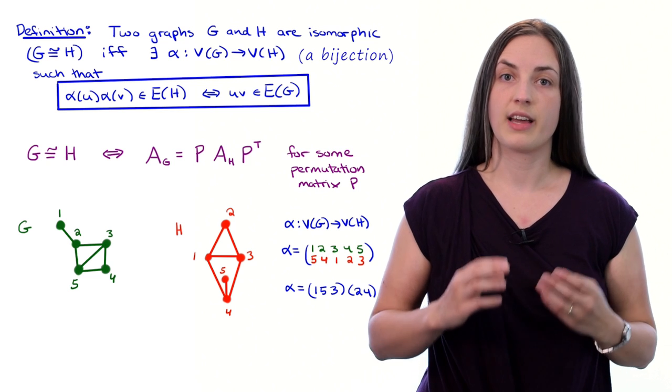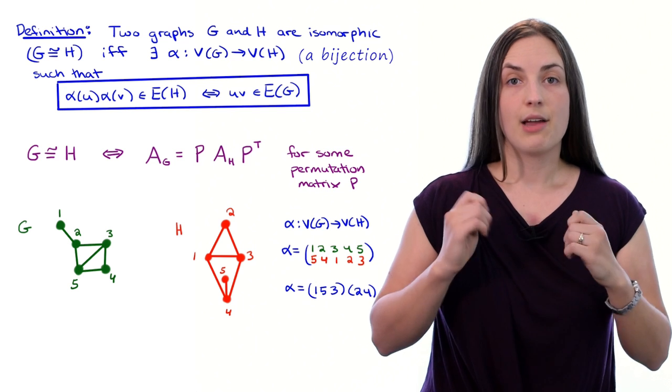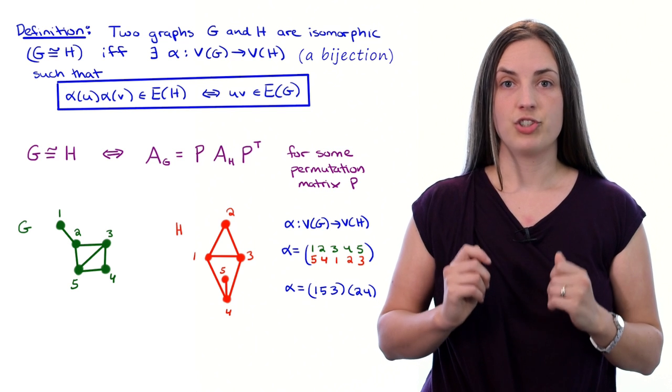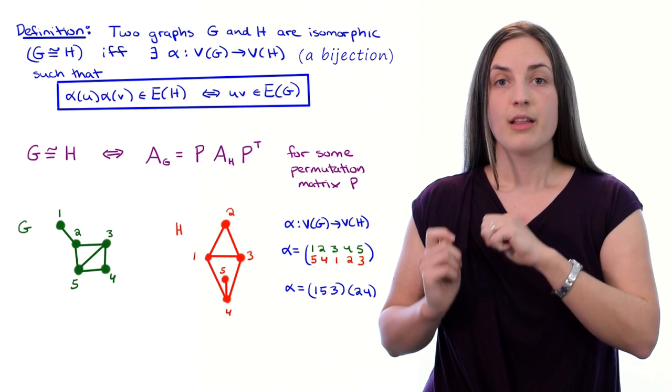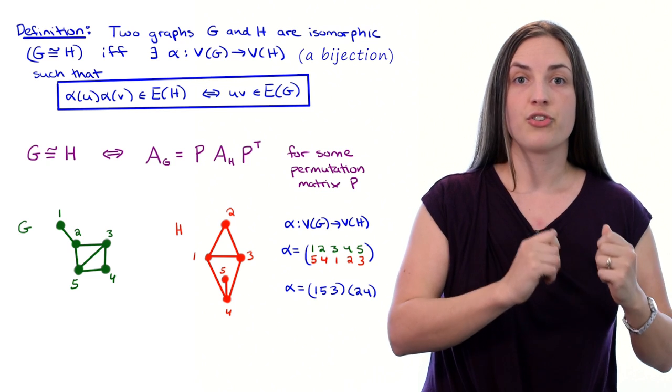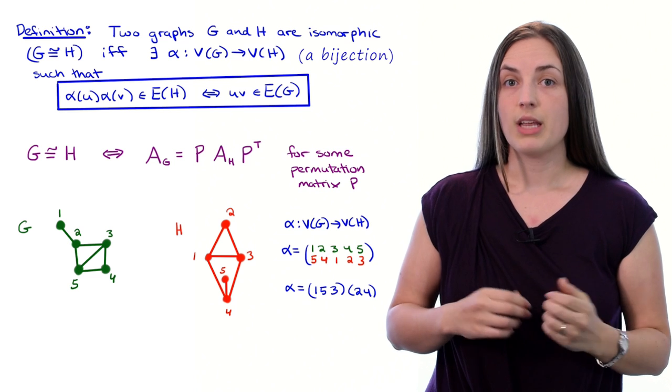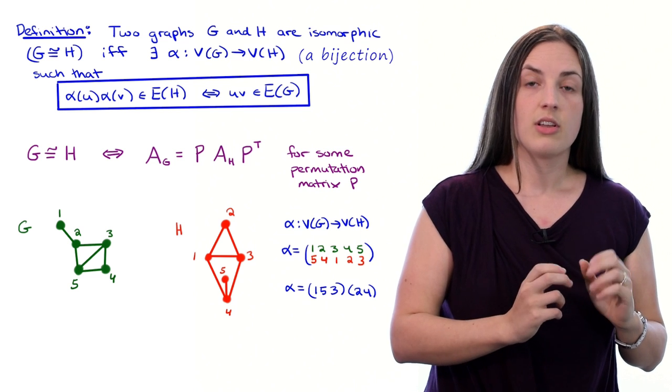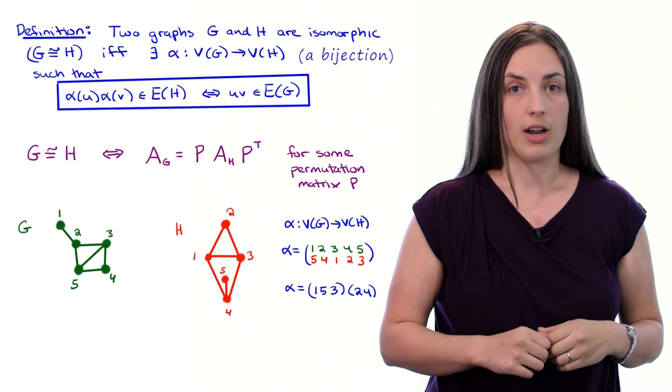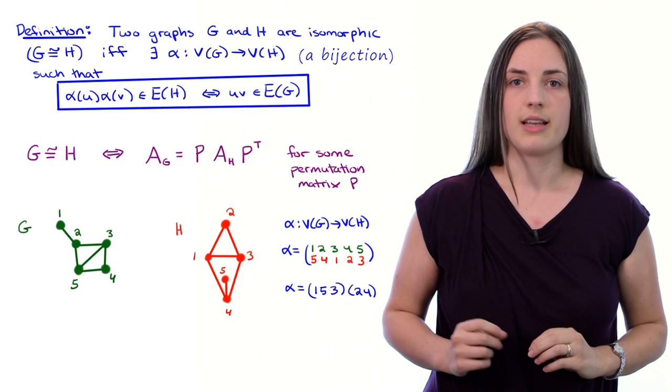In order to prove that α is indeed an isomorphism, we would need to check every pair of vertices in graph g and show that if they were adjacent in graph g, then after the mapping they get mapped to a pair of vertices that are adjacent in graph h. And also, if they were not adjacent in graph g, then they need to map to a pair of vertices which are not adjacent in graph h.